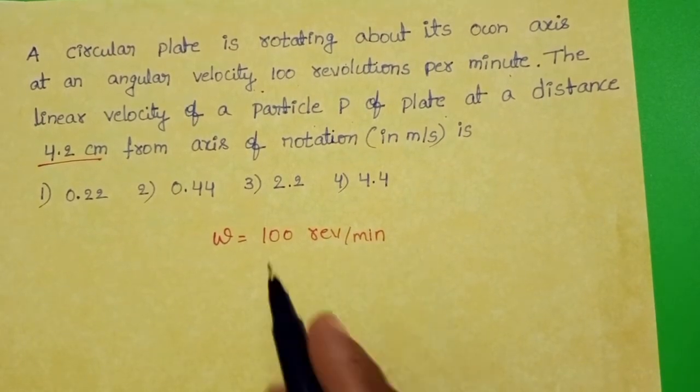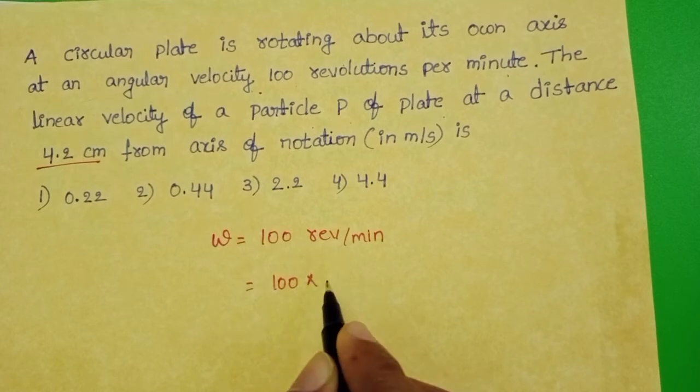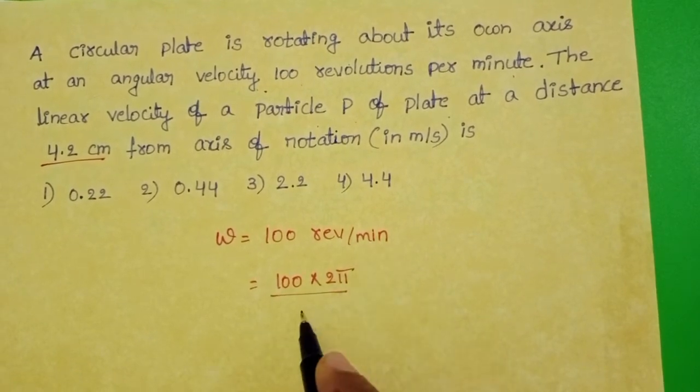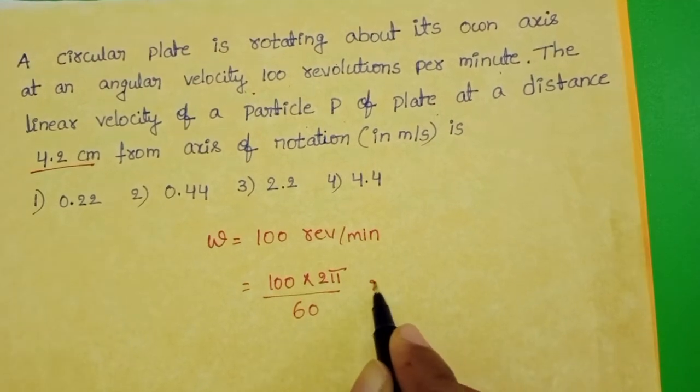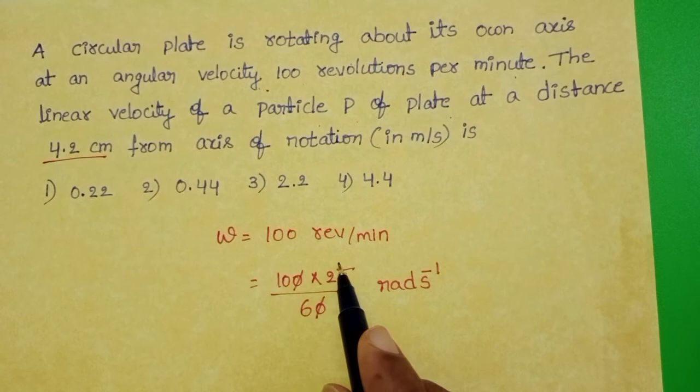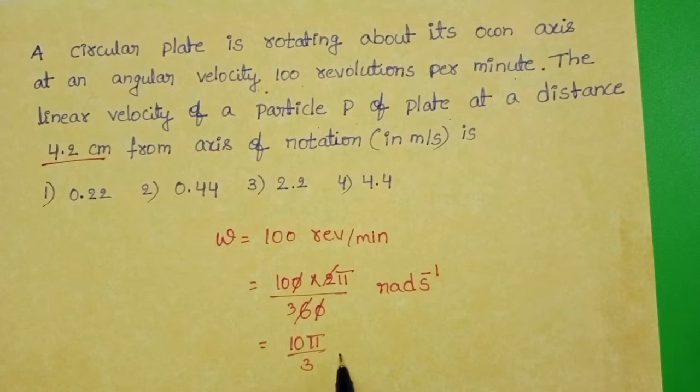Convert into radian per second. One revolution equals 2π radian and one minute equals 60 seconds. Zero gets cancelled, 2 ones, 2 threes. 10π by 3 radian per second.